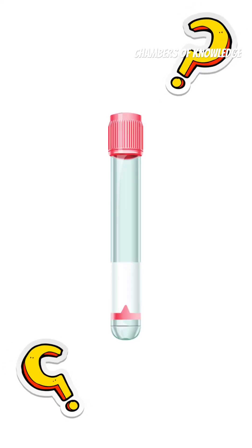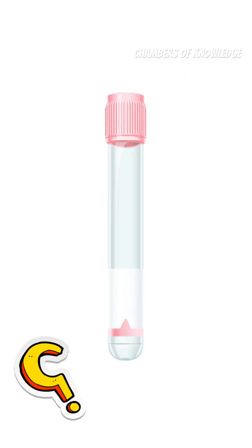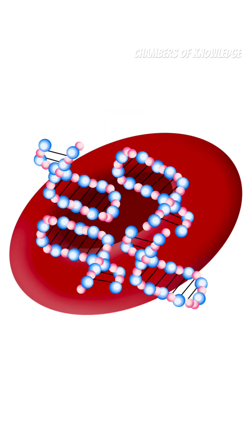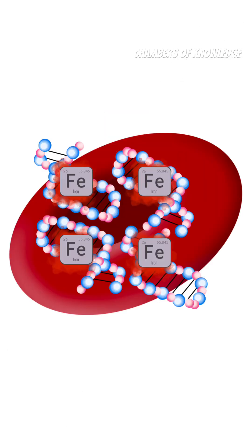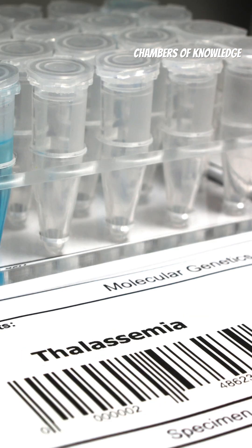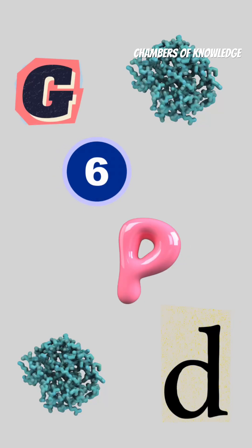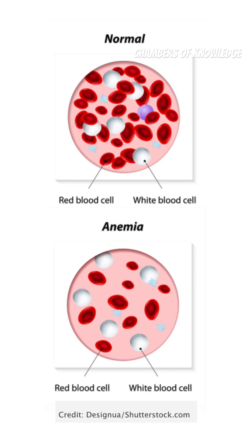Hemolysis can be caused by quite a number of things. There are conditions caused by instability in hemoglobin, such as sickle cell anemia and thalassemia. You also have enzyme deficiencies like G6PD deficiency or pyruvate kinase deficiency.